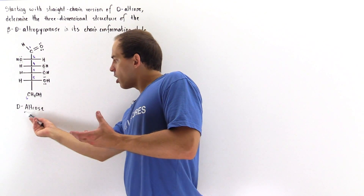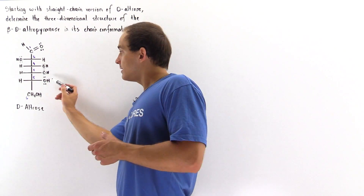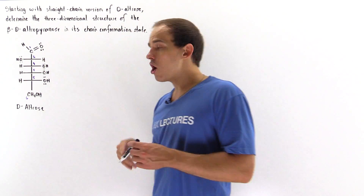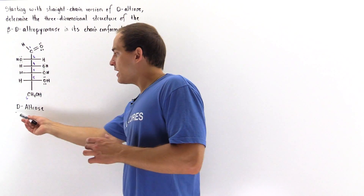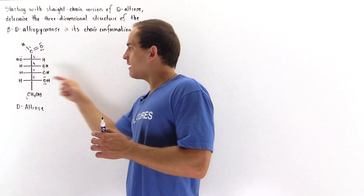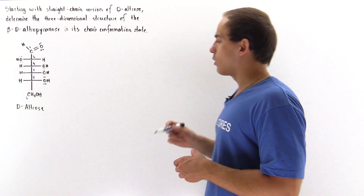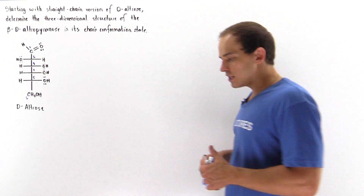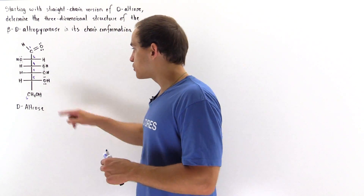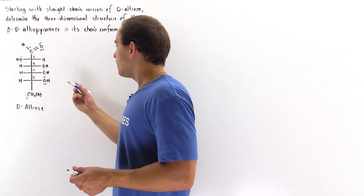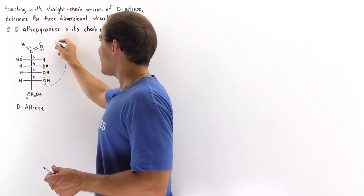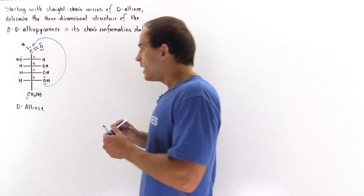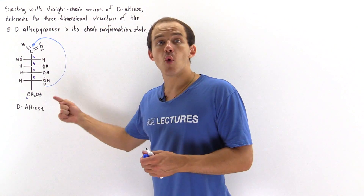The D part of D-altrose means that our hydroxyl group on the fifth carbon, the last stereogenic carbon, is found to the right. If we had L-altrose, it would be pointing to the left. In the first step, we have an intramolecular nucleophilic reaction taking place, in which this oxygen on carbon five acts as the nucleophile attacking the carbon of our carbonyl group.